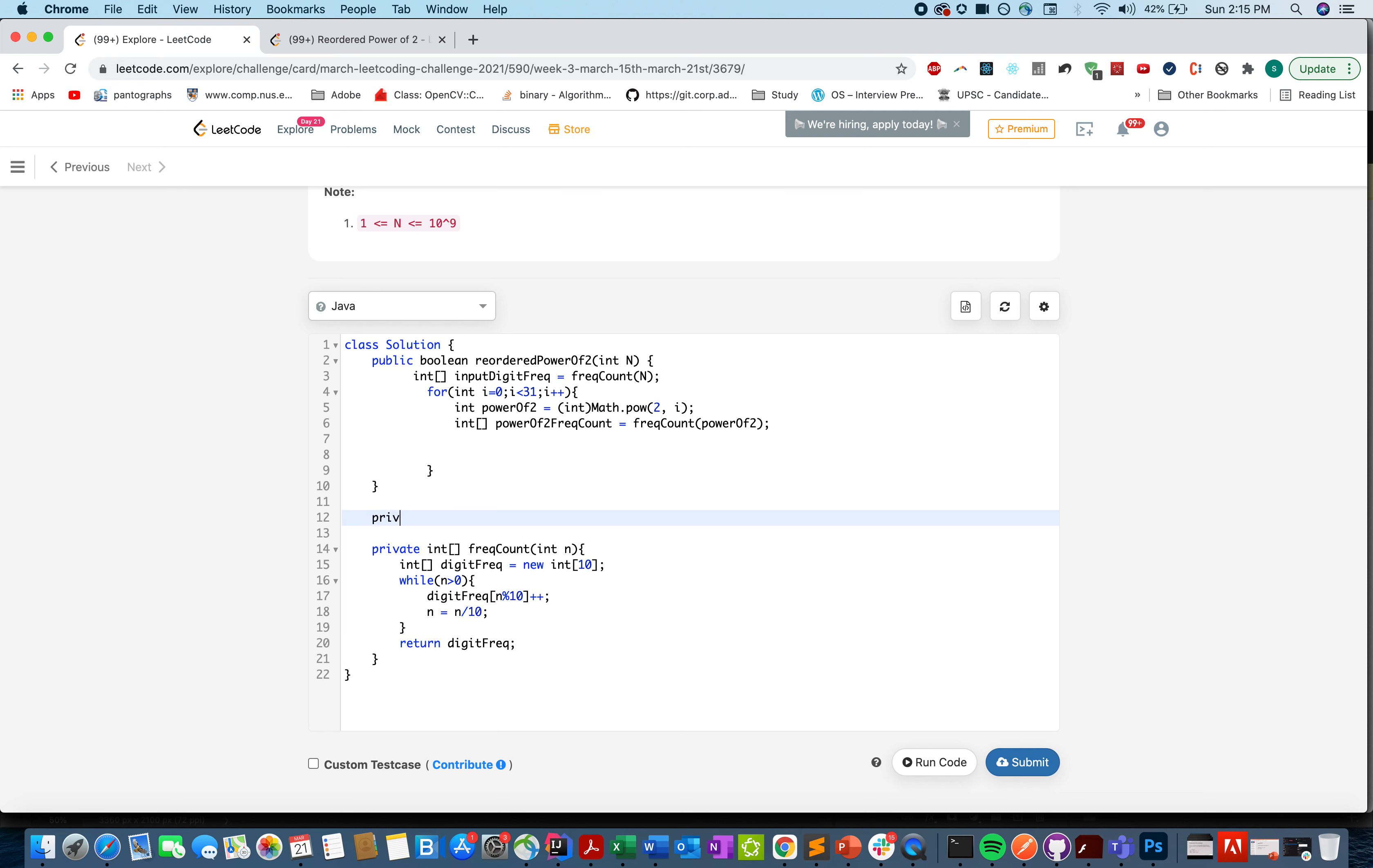Let's write a helper method for this. Private boolean compareArray, integer freqCount1, integer frequency freqCount2. Let's take a boolean match and let's define it to true. For integer i equals 0, i is less than 10, i plus plus. If my frequency of ith index is not equal to my freqCount2 of ith index, that means it's an unmatching case. We'll simply return false. Otherwise let's return true.